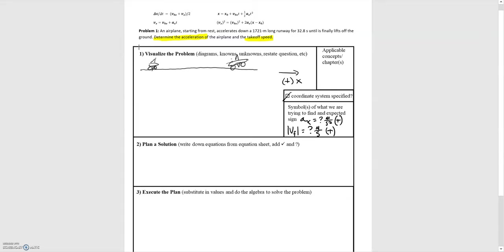We have specified our coordinate system. This is just motion down a runway, so this is a 1D kinematics problem — section 2.5.